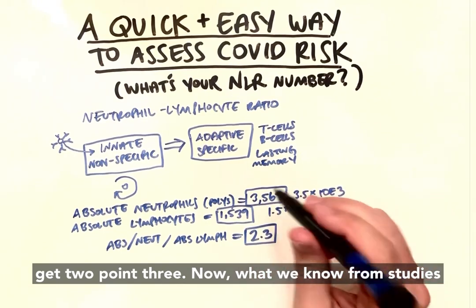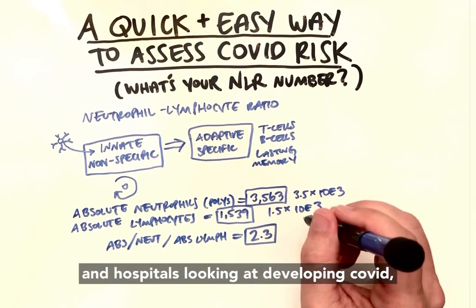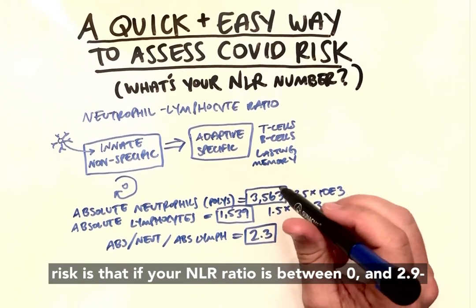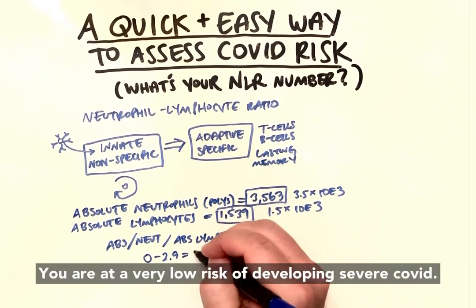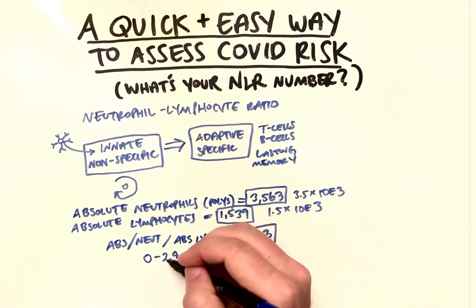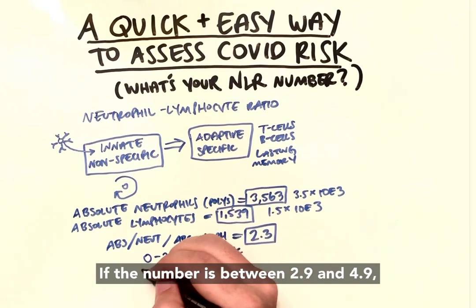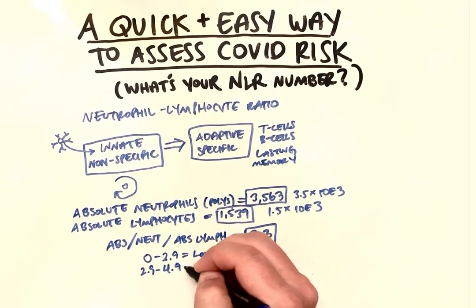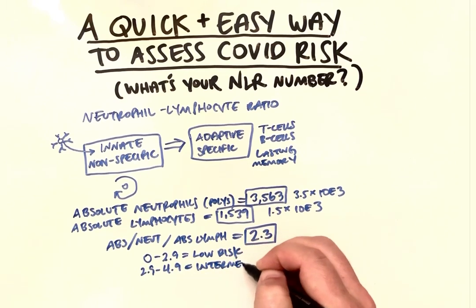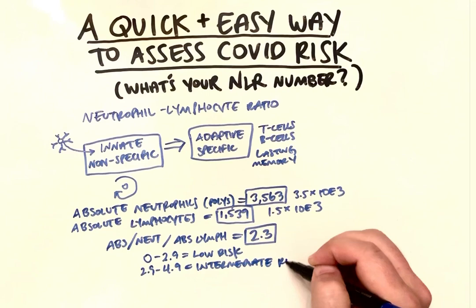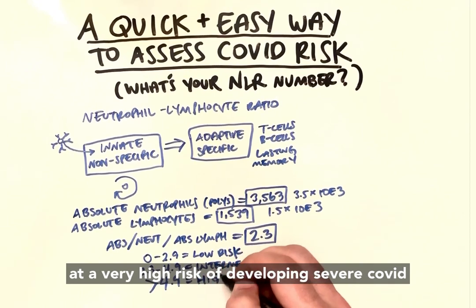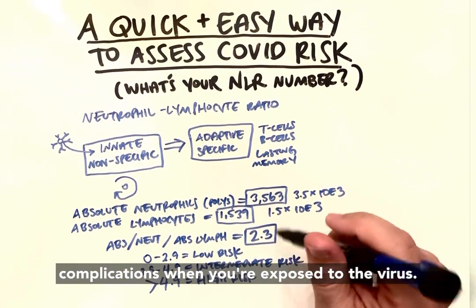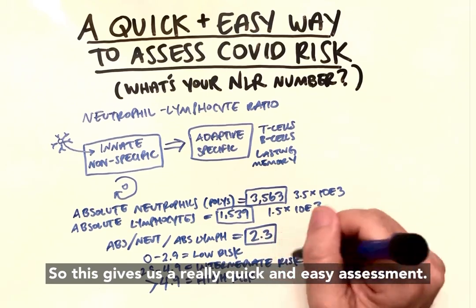From studies and hospitals looking at COVID risk, we know that if your NLR ratio is between 0 and 2.9, you are at very low risk of developing severe COVID. If the number is between 2.9 and 4.9, you are at intermediate risk. If the number is greater than 4.9, you are at very high risk of developing severe COVID complications when exposed to the virus.